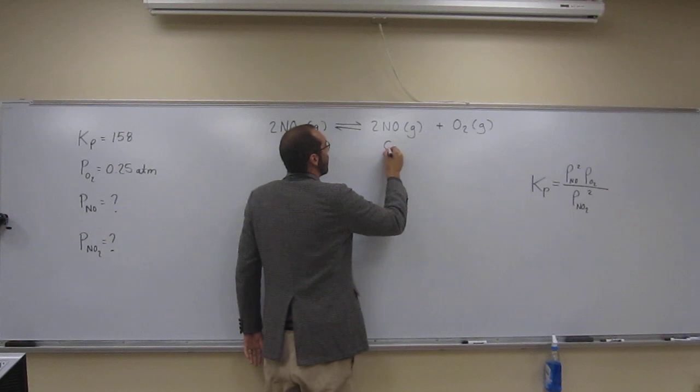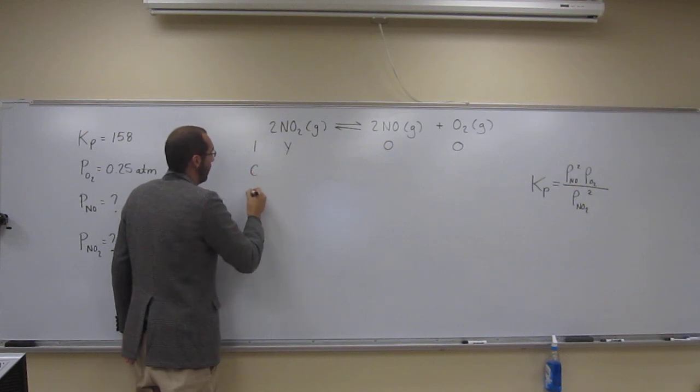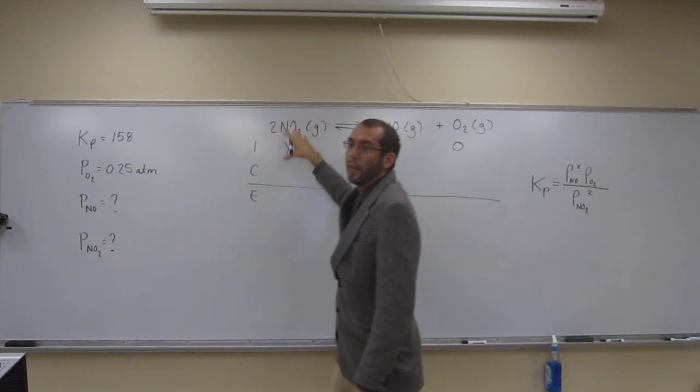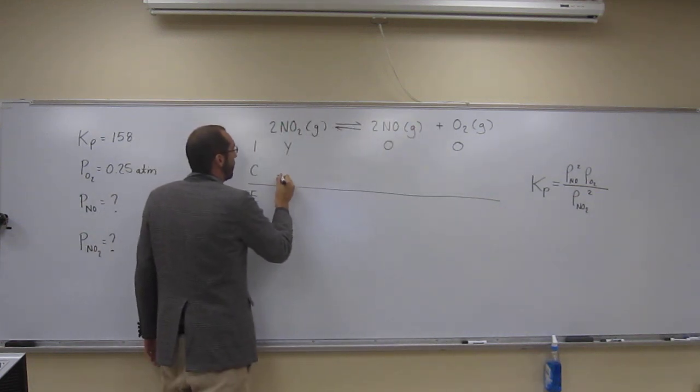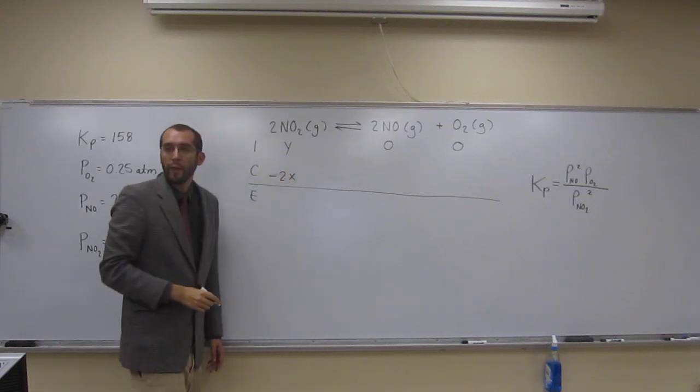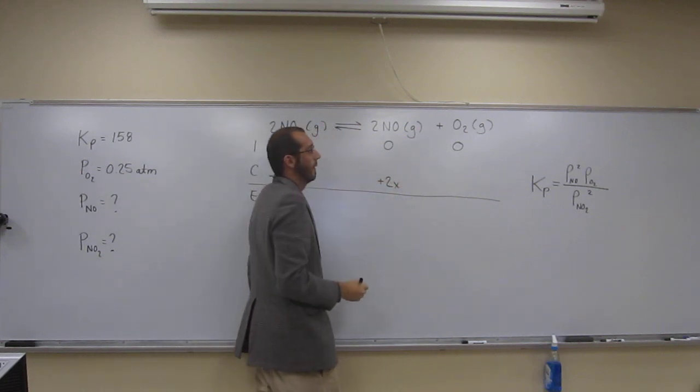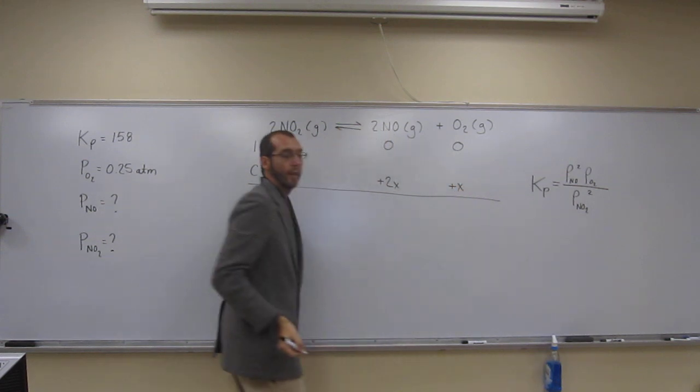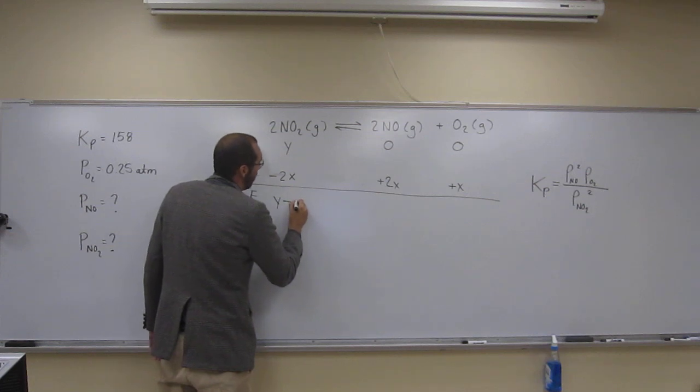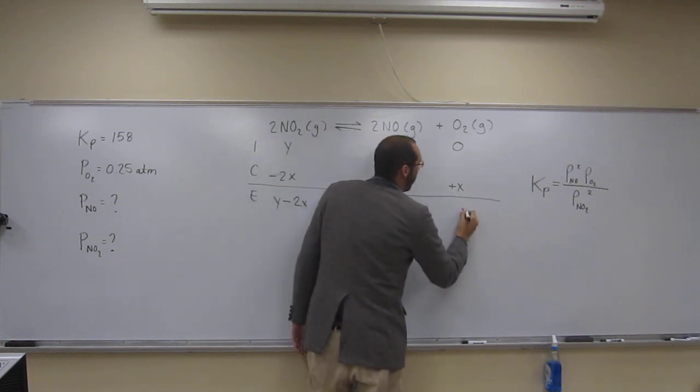Over here we didn't start with any, so it's going to be zero and zero there. So we're going to set up an ice table. And since we only started with nitrogen dioxide, right, we're going to subtract. Subtract 2x from that side, add 2x to that side, and add x to that side. So we could say y minus 2x, 2x, and x.